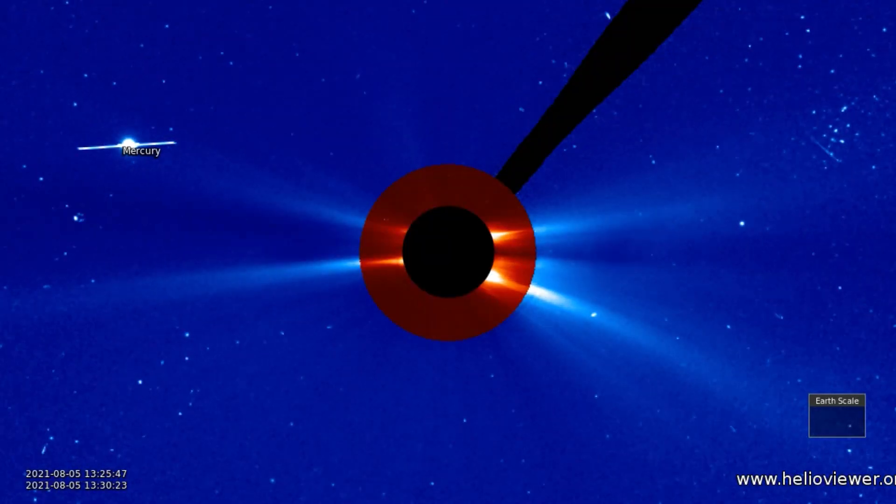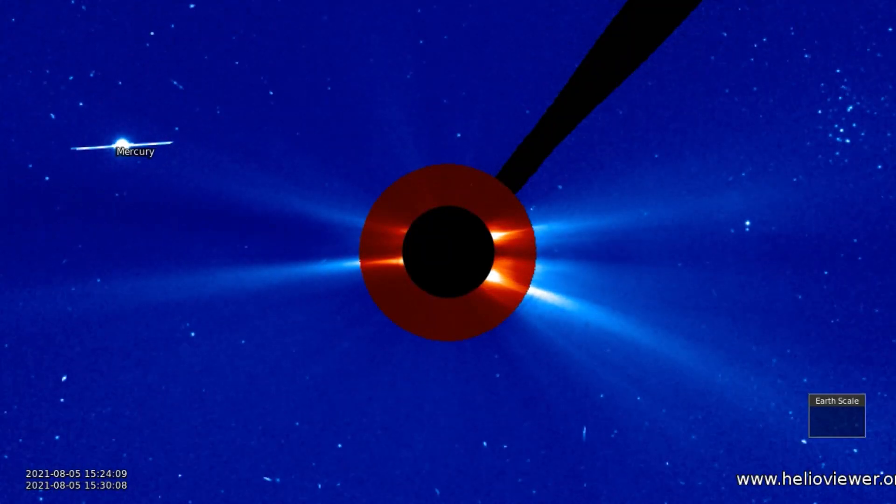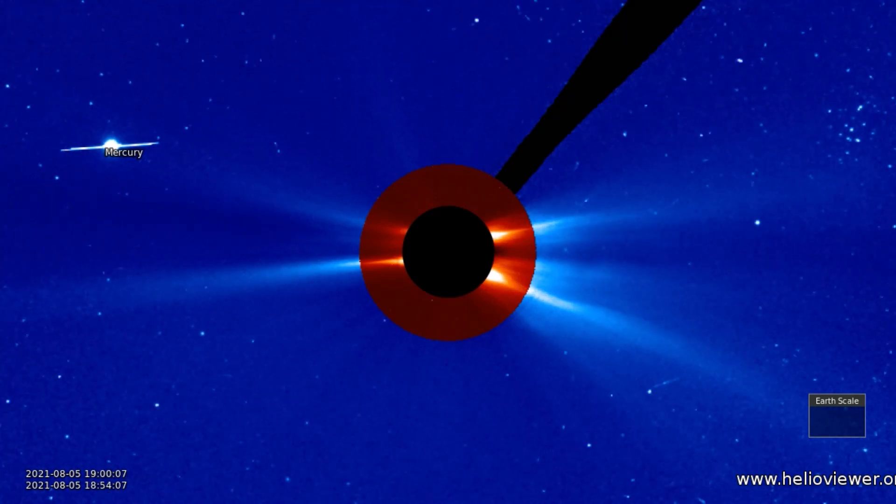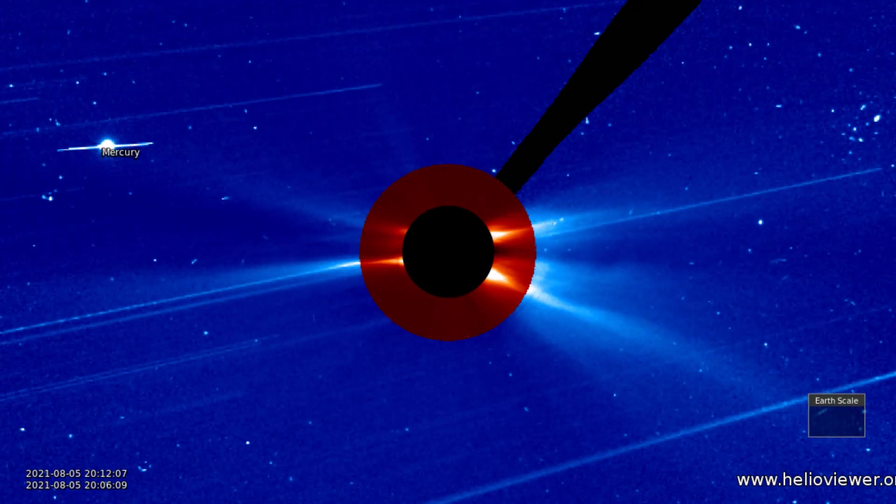Using the LASCOC2 and C3 filters, Mercury is observed to your upper left, as the flare is seen along with some cosmic particles rushing by our field of view.